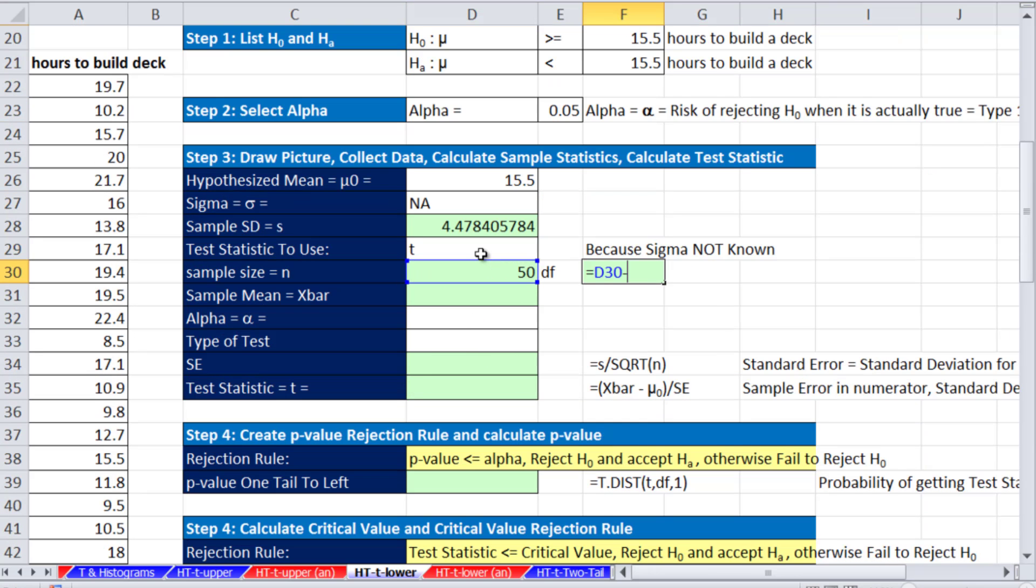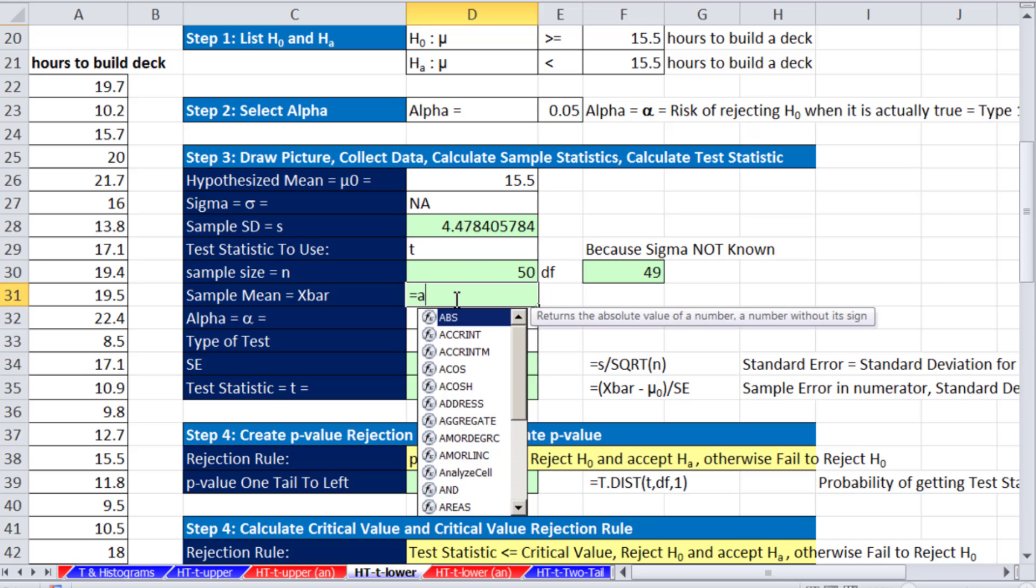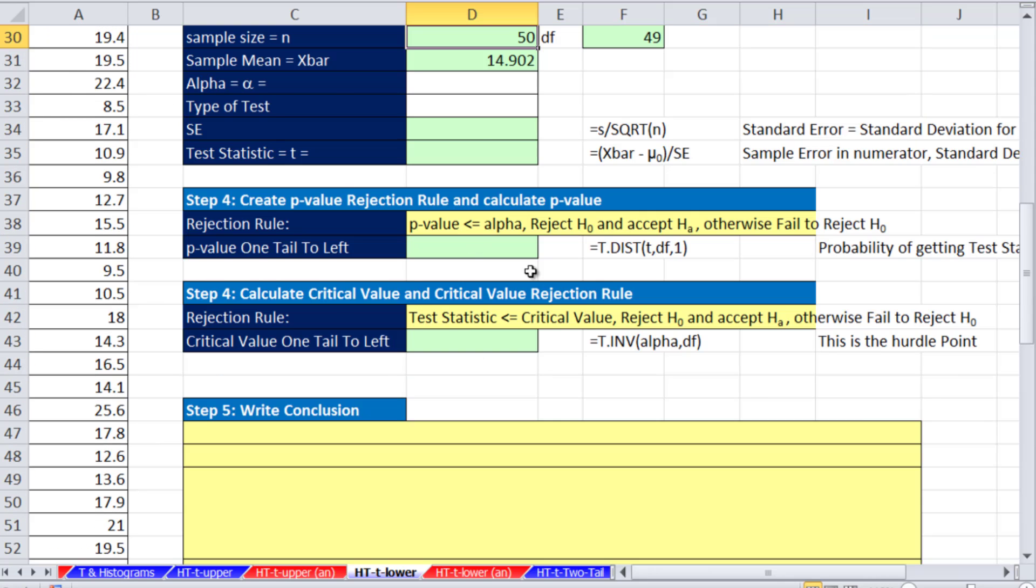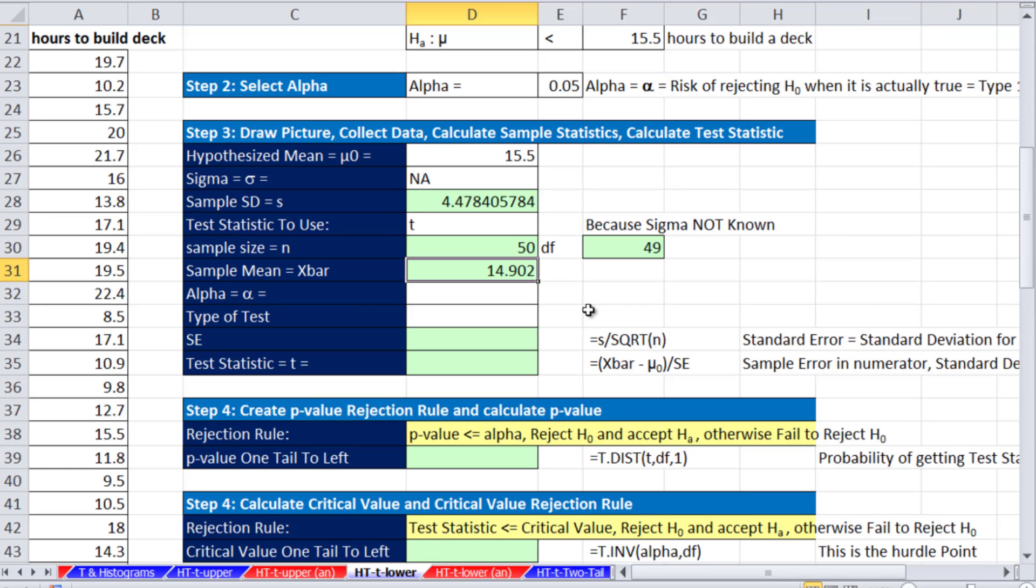Degrees of freedom, we take our N and subtract 1 sample, 49. Our X bar equals average. Control shift down arrow, shift enter. We have a mean from this sample of 14.9. So it looks like this sample, we certainly have a time less than our 15.5 from our previous method. Our alpha will equal our 0.05. Type of test. Well, this is a one tail to the left.